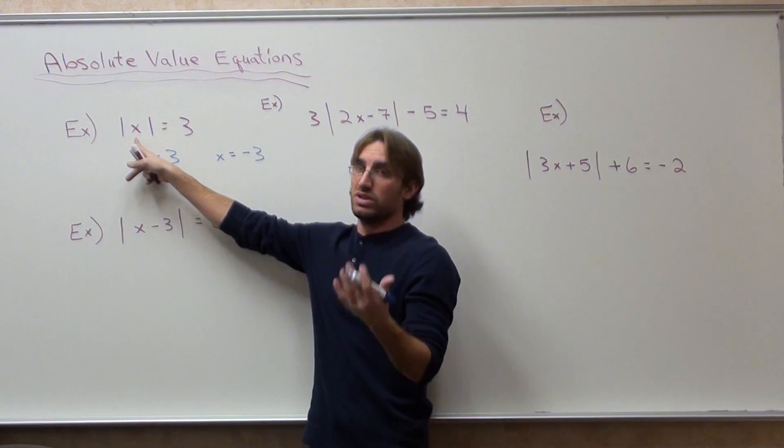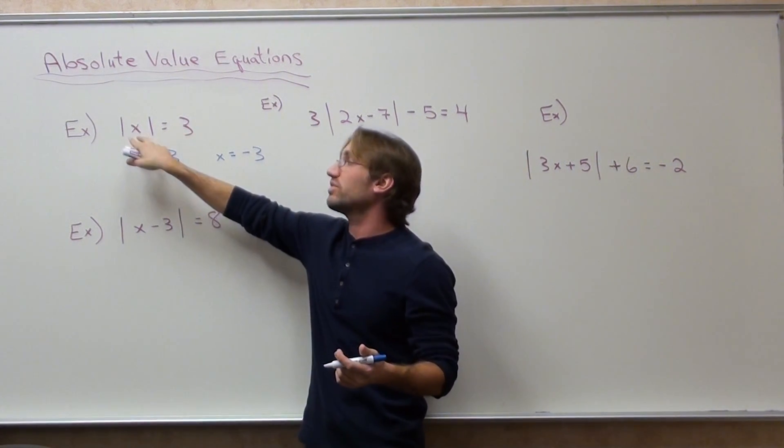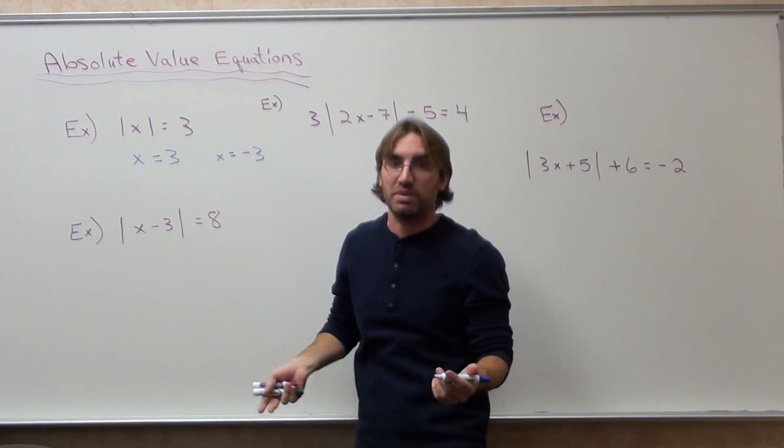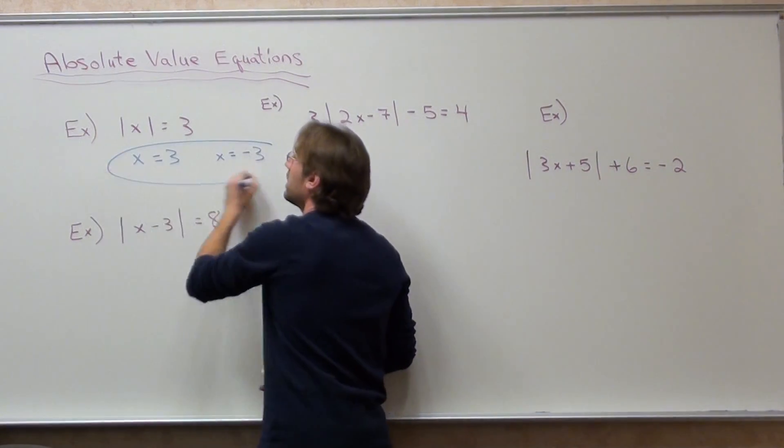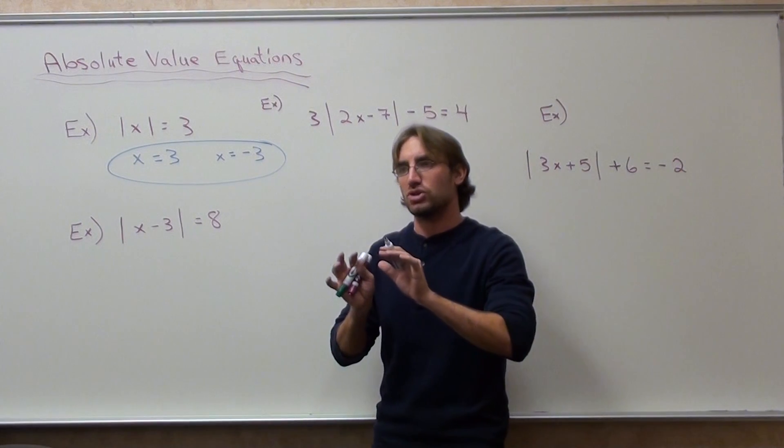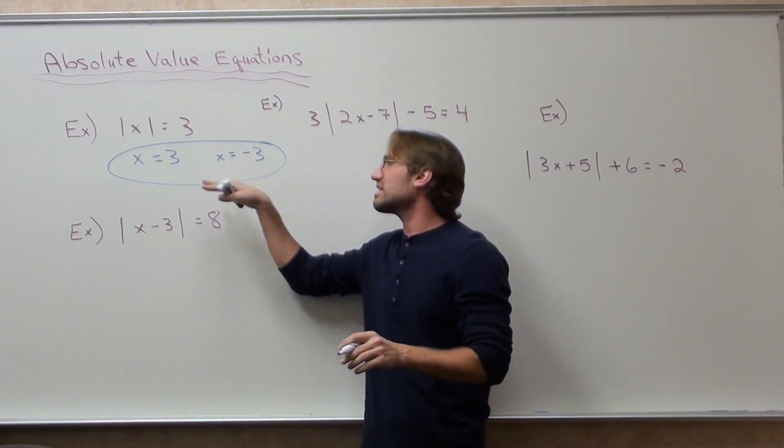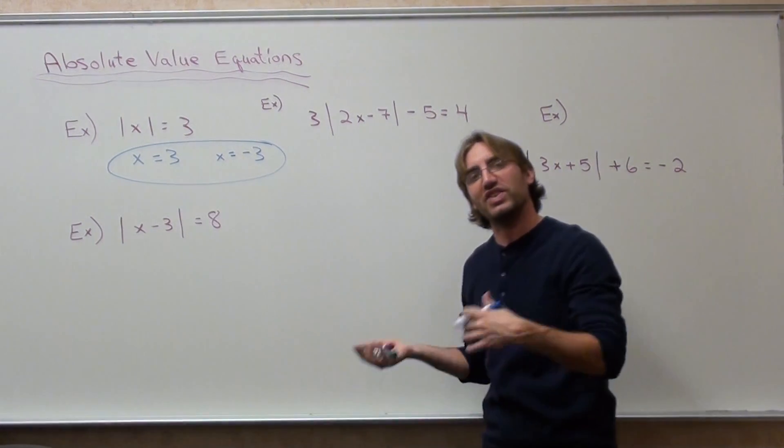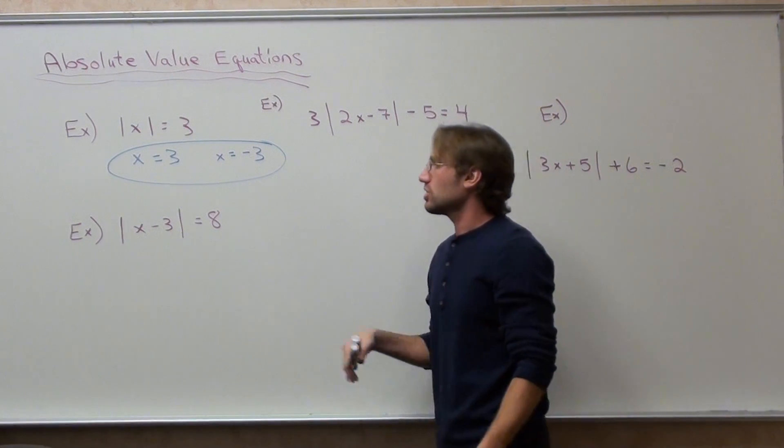The absolute value of negative three is three. That's about it. What you're doing when you're trying to solve these problems is you're trying to solve for its positive and negative. That doesn't come off in this example, but it will come off in the next example more clearly. So here we go.